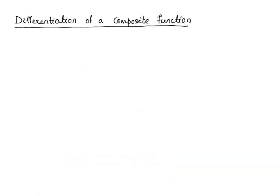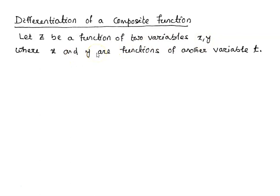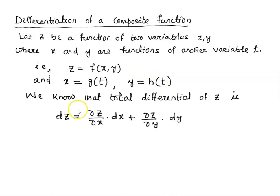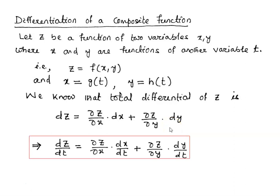Now, differentiation of a composite function. Let z be a function of two variables x and y, where x and y are functions of one another variable t. That is z equal to f(x, y), x equal to g(t), and y equal to h(t). We know that the total differential of z is dz equal to del z by del x times dx plus del z by del y times dy. Dividing by dt on both sides, we have dz by dt equal to del z by del x times dx by dt plus del z by del y times dy by dt.